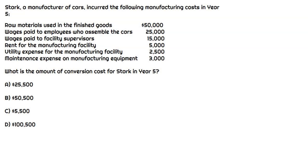In this question, we have Stark, and they are a manufacturer of cars. We're given some manufacturing costs that were incurred during year five. Ultimately, we need to figure out what amount of conversion costs Stark had in year five.